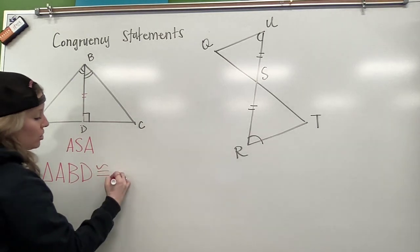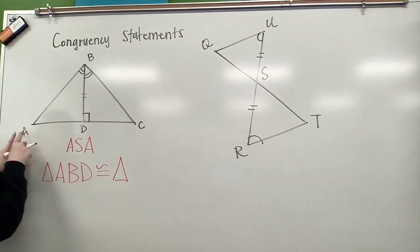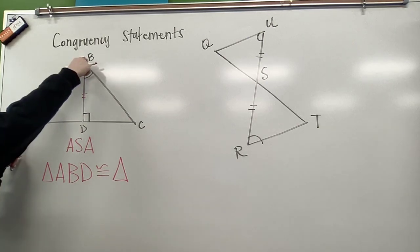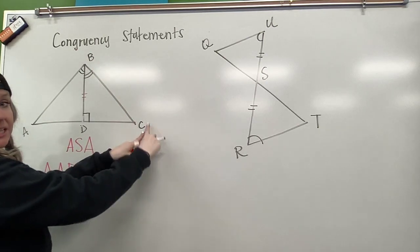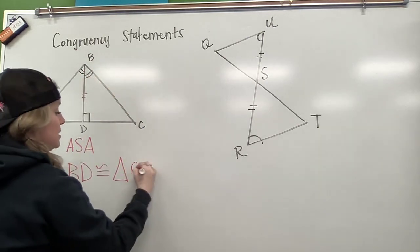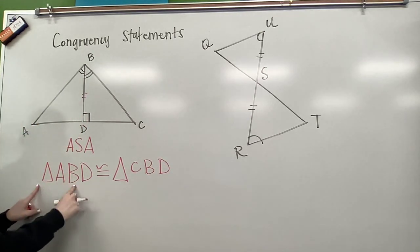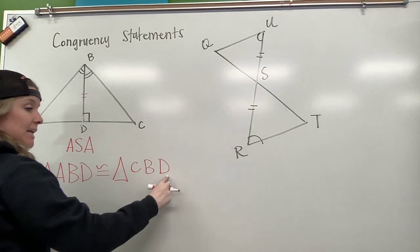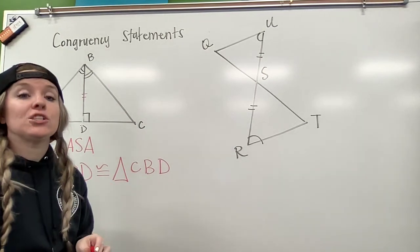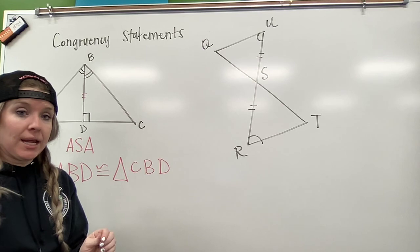This triangle is congruent to triangle - if I'm going to start at A and go to B, then I'm going to start here at C and go to B. So this would be C, B, D. Triangle ABD is congruent to triangle C, B, D. Order is extremely important here.